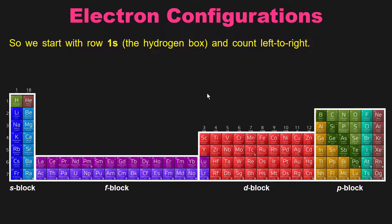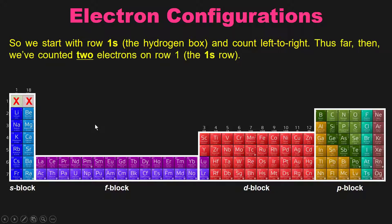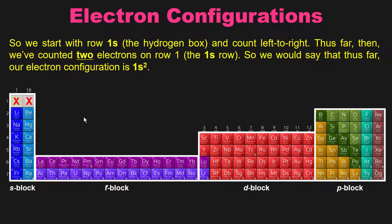So let's start with row 1s, the hydrogen box right here and count left to right. We're at the 1s row, so we have 1s box 1 and box 2. Thus far, we've counted two electrons on row 1, which is the 1s row. So we would say that our electron configuration is 1s2, because we counted two boxes in the 1s row. This represents two electrons in a 1s orbital.